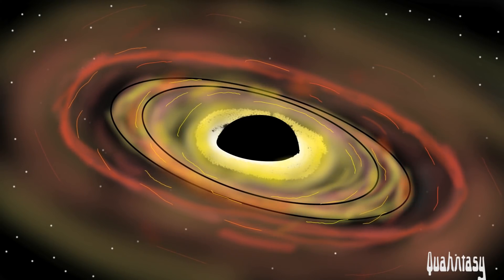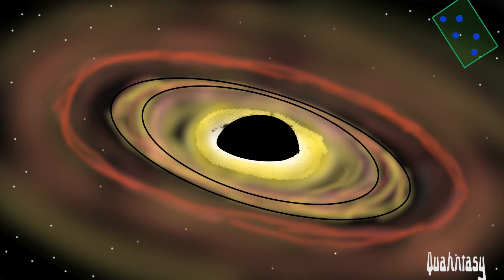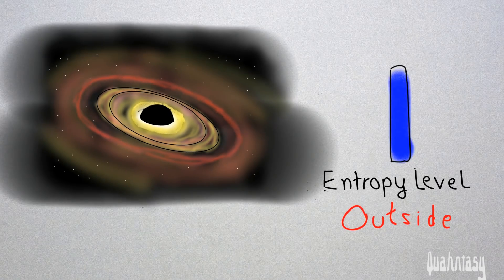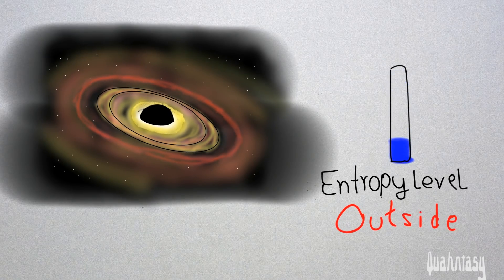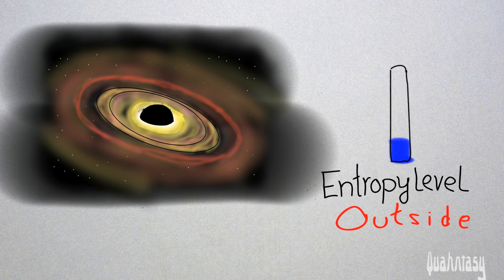Just throw some matter with a lot of entropy, such as a box of gas, down the black hole. The total entropy of the matter outside the black hole would go down. So the observer outside must also consider the entropy of the black hole for the second law to hold.